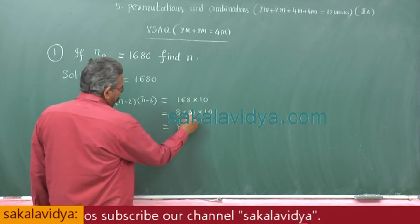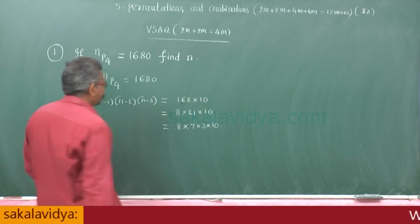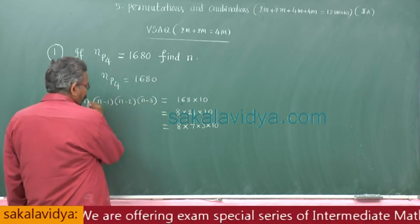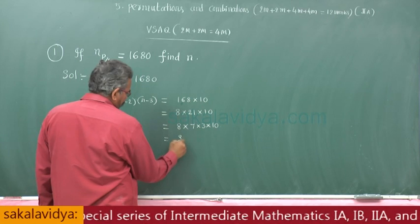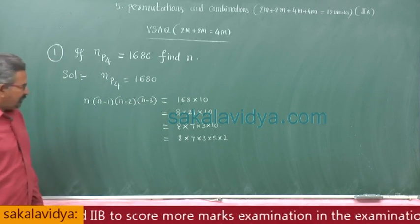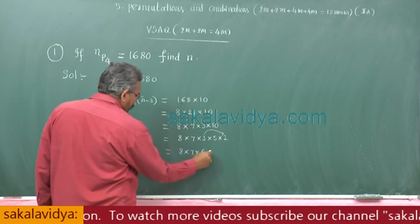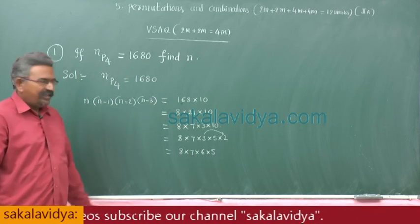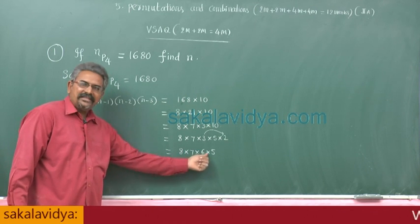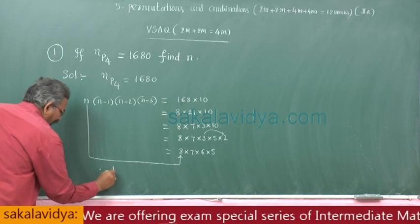Now this is we can write 1, 2, 3, 4. This 8 into 7 into 3 into 5 into 2, write down. This is now we can write 8 into 7 into 6 into 5. Now see here, 4 places are filled with 8 objects: 8 ways, 7 ways, 6 ways, 5 ways. That means here n equals to 8. Therefore, n is equal to 8.